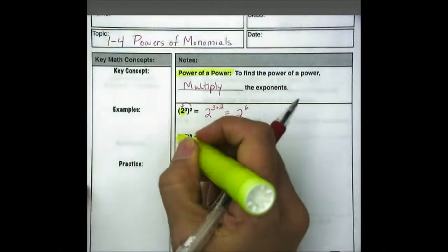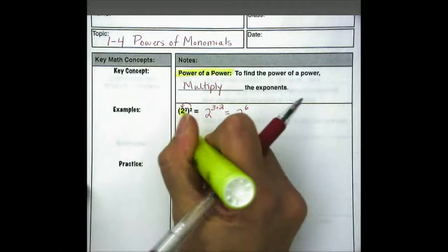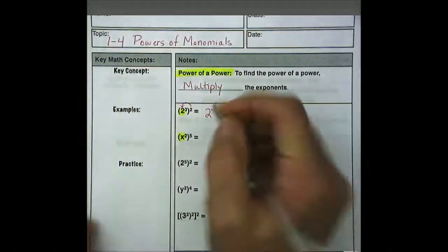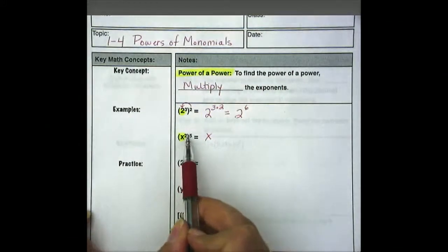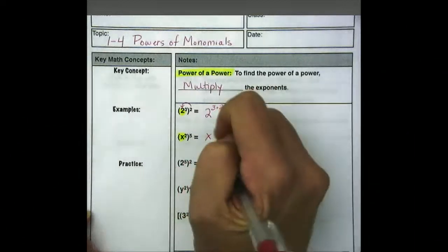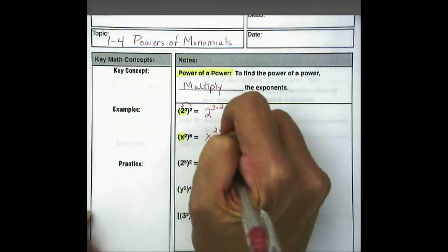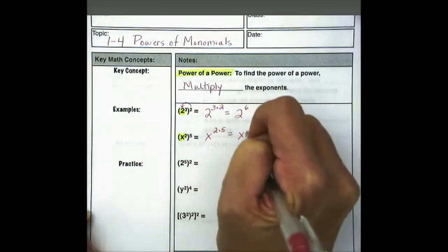On the next one, our base is x. Remember that the base is going to stay the same. So we're going to raise x to the 2nd to the 5th power, so x to the 2 times 5 equals x to the 10th.